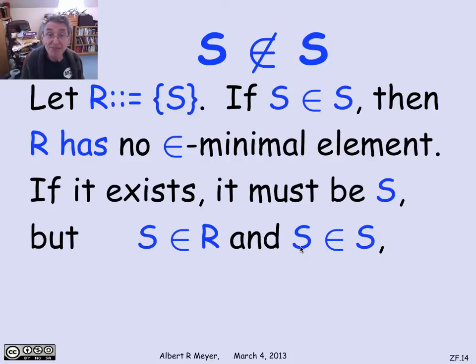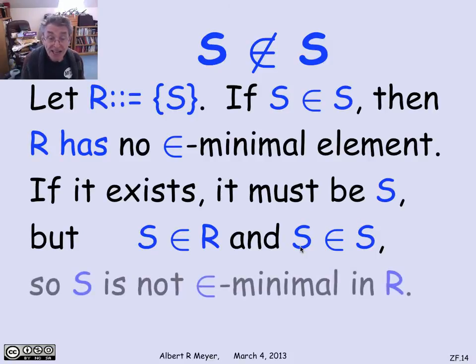So s is not r minimal. And the foundation axiom then immediately implies that you can't have s be a member of s. S is not membership minimal in r. And this argument extends in a nice way to member of a member and member of a member of a member.